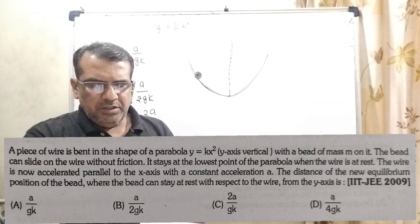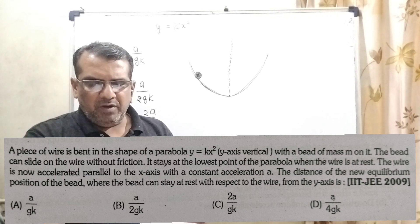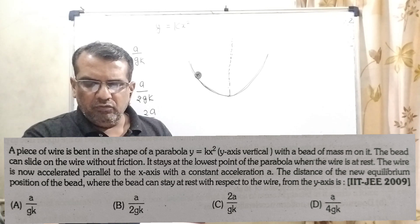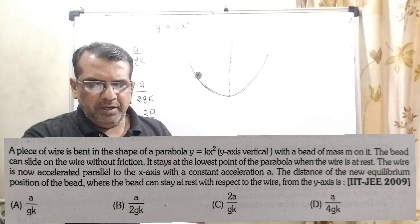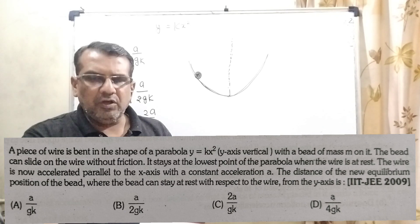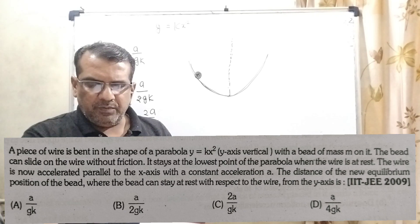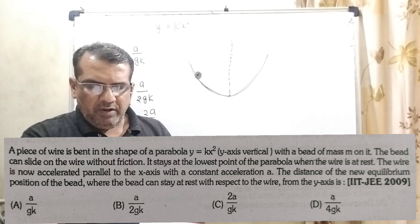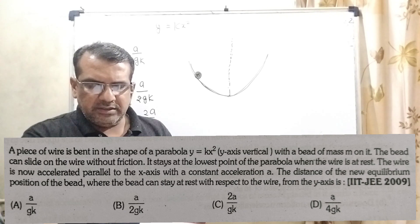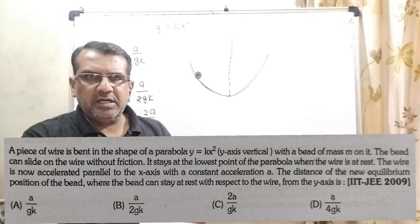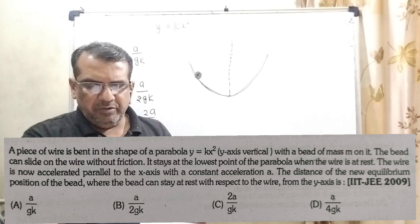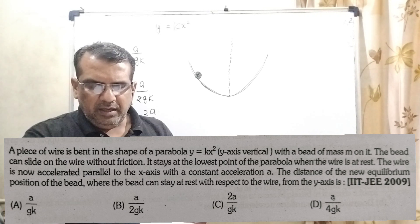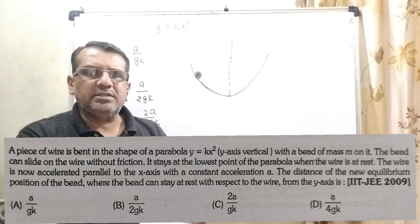Now here is the question. A piece of wire is bent in the shape of a parabola y equals k x squared, y-axis here vertical, with a bead of mass small m on it. The bead can slide on the wire without friction. It stays at the lowest point of the parabola when the wire is at rest. The wire is now accelerated parallel to the x-axis with a constant acceleration a. The distance of the new equilibrium position of the bead, where the bead can stay at rest with respect to the wire from the y-axis, is: